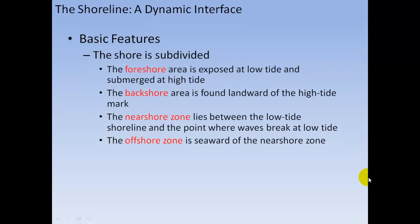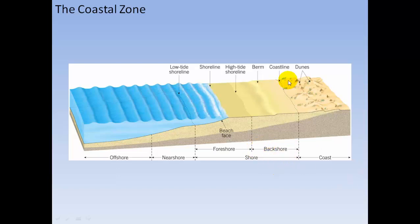The shoreline is subdivided. The foreshore area is exposed at low tide and submerged at high tide. The backshore is found landward of the high tide mark. The nearshore zone lies between the low tide shoreline and the point where waves break at low tide. The offshore zone is seaward of the nearshore zone. Our shoreline sits halfway between low tide and high tide.